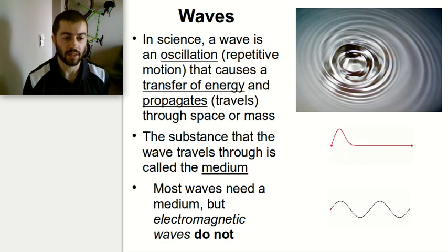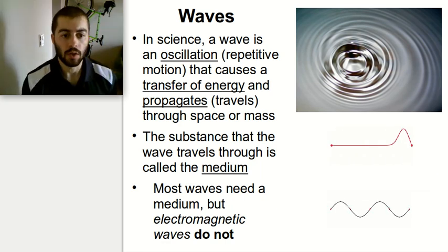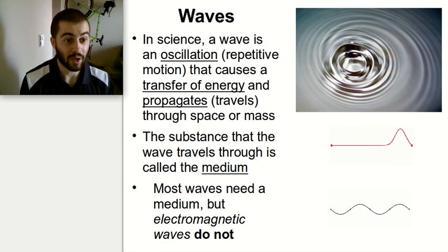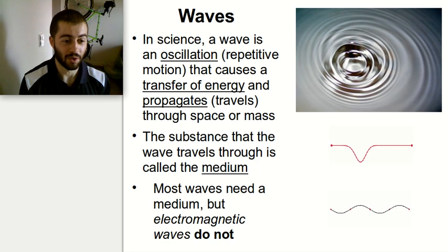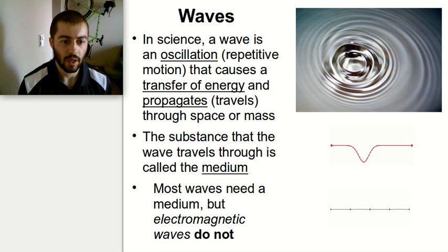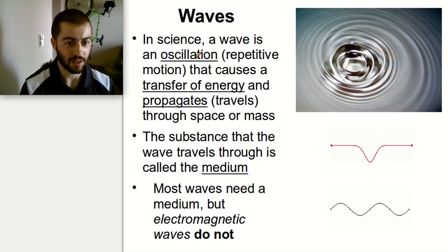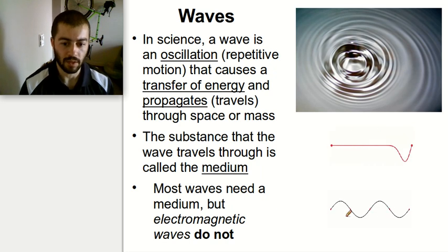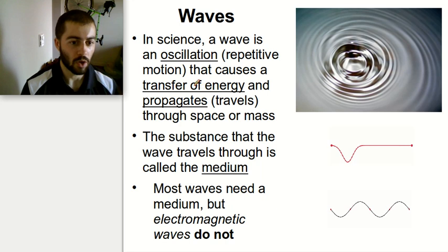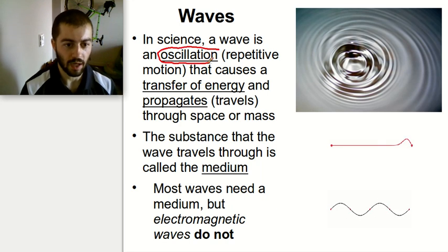In this video we're going to talk about the scientific concept of waves. When you think of the word wave, there's a few things you can think of, like ocean waves, or waving your hand to someone. But in science, waves are an oscillation — what that means is just a repetitive motion. This motion here is repeating itself. So the first aspect of a wave is that it's an oscillation.